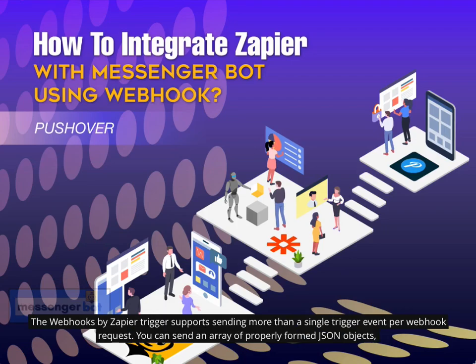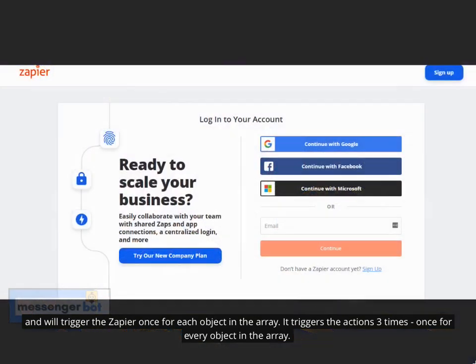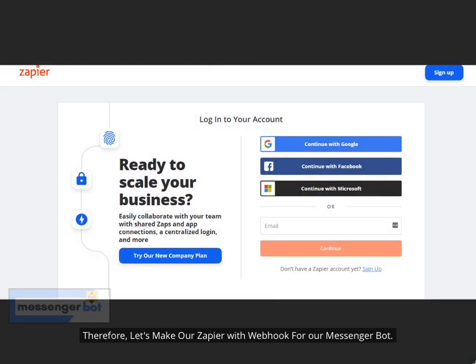The Webhooks by Zapier trigger supports sending more than a single trigger event per webhook request. You can send an array of properly formed JSON objects, and it will trigger Zapier once for each object in the array — triggering the actions once for every object. Let's make our Zap with webhook for our Messenger Bot.